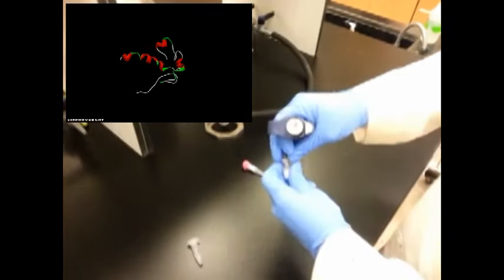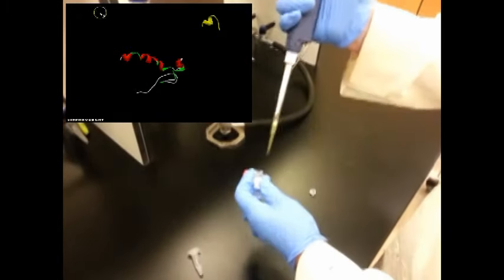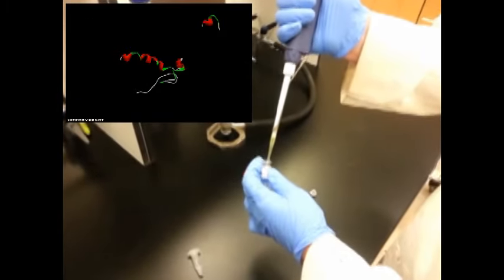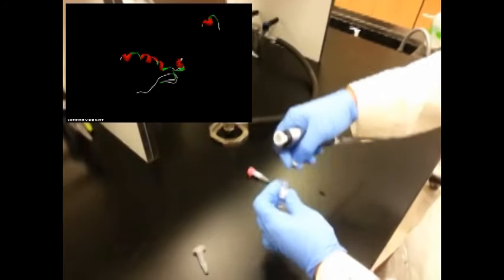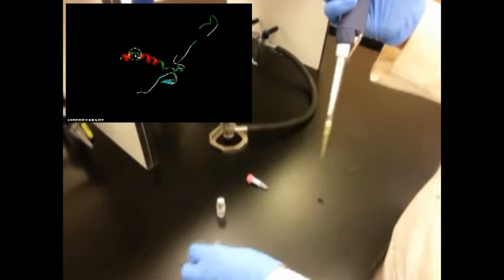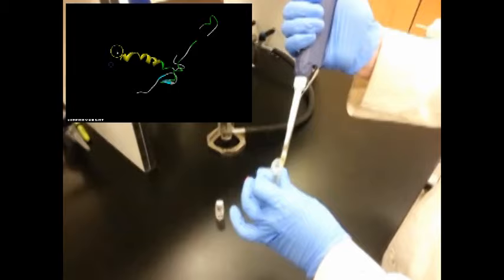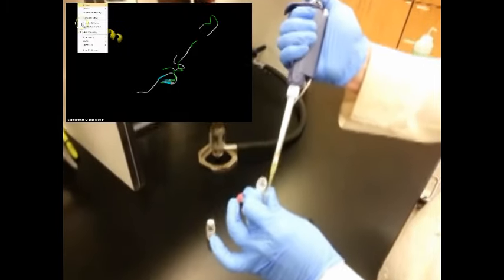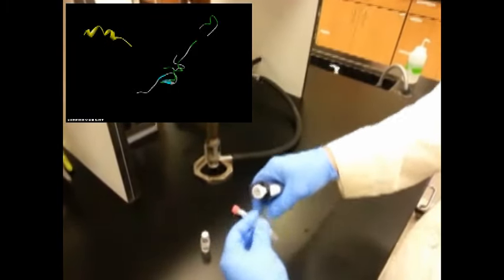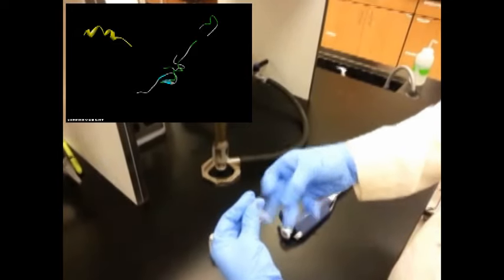The first chemical that is added to your saliva sample is to help unfold all of the proteins in the sample. This chemical is called dithiothreatol. Dithiothreatol helps unfold the proteins in the sample.